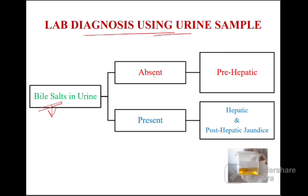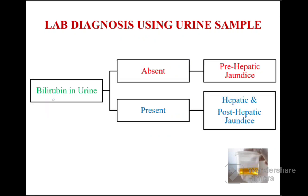Lab diagnosis using urinary sample — detection of bile salts in urine. If bile salts are absent, it indicates the cause is pre-hepatic or hemolytic jaundice. If bile salts are present in urine, that indicates hepatic or post-hepatic jaundice.